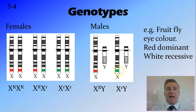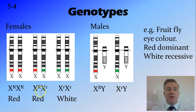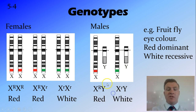Looking at the phenotypes: red is dominant over white, so the homozygous dominant female will have red eyes, the heterozygous female will also have red eyes, and the homozygous recessive female will have white eyes. In males, dominance doesn't actually matter because there are only two versions — if you've got the red allele you'll have red eyes, and if you've got the white allele you'll have white eyes.